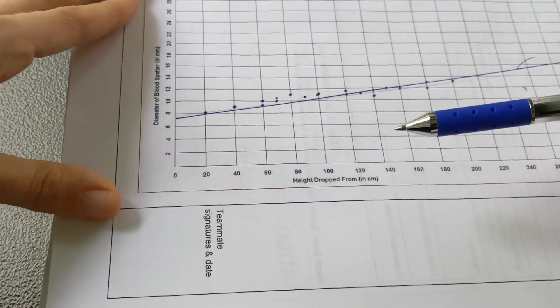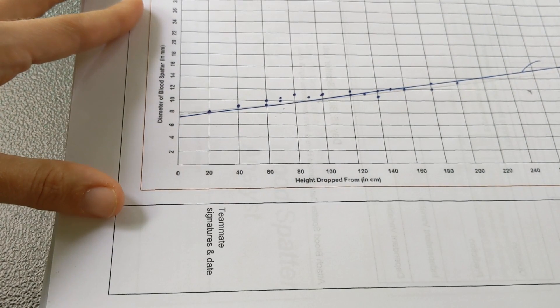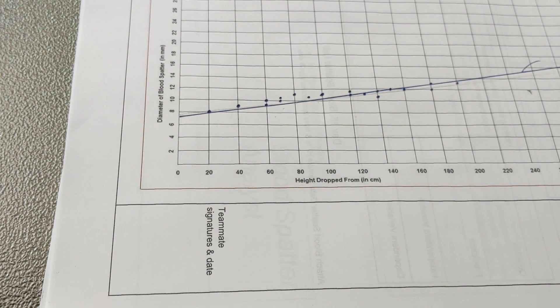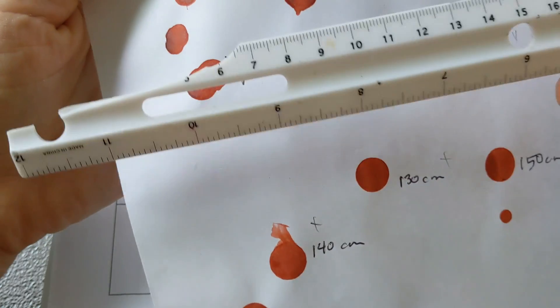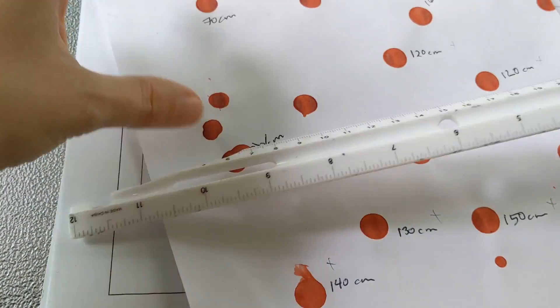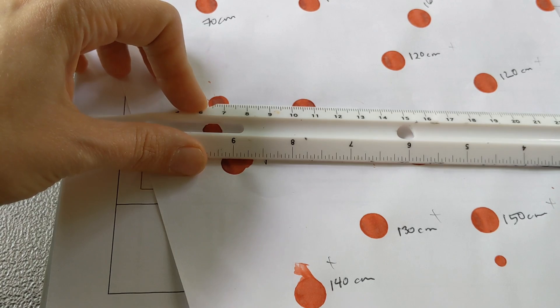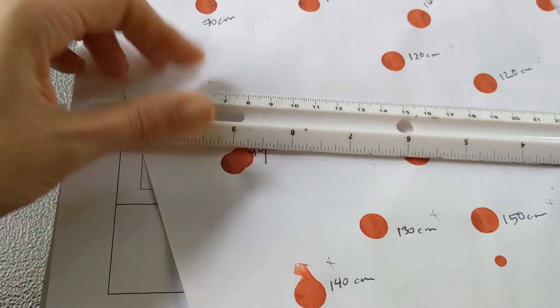You can do this the opposite way as well, so if you have a droplet from an unknown height, which is going to be the case in the crime scene, then you measure the diameter of that droplet. So let's say this is our unknown droplet. I didn't label it, so we don't know the height from which this droplet fell. I measure its diameter. Looks like it's about 11 millimeters in diameter.